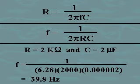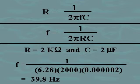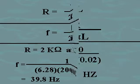Let's look at an example. In a low-pass RC filter, what is the characteristic roll-off frequency, also called the 3 dB down point, if R is equal to 2 kilohms and C is equal to 2 microfarads? Using the previous equation, the frequency is equal to 1 divided by 6.28 times 2K ohms times 2 microfarads, or 39.8 hertz.